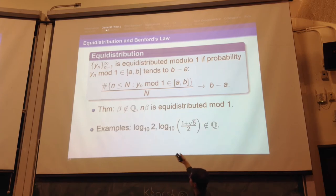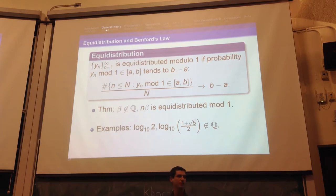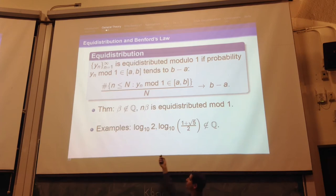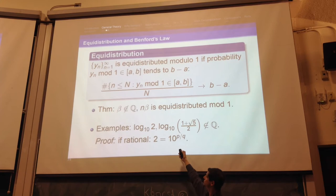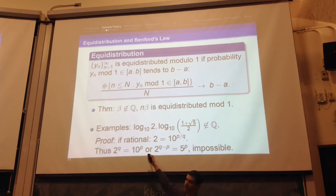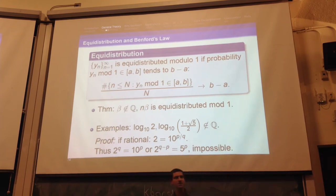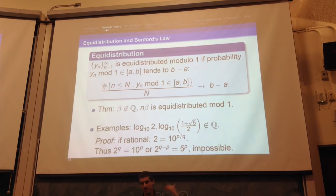The log of 2 base 10 and the log base 10 of the golden mean are both irrational numbers. Let's prove that log of 2 base 10 is irrational. If it were rational, I could write 2 equals 10 to the p over q. Raise both sides to the qth power. Since 10 is 2 times 5, simplify to get 2 to the (q minus p) equals 5 to the p. This is not possible — I'll leave it as an exercise. So this proves that log of 2 base 10 is irrational. As a nice exercise, prove that log of the golden mean is also irrational.